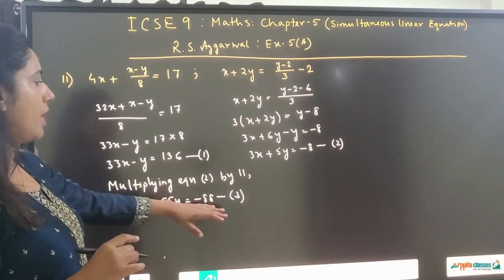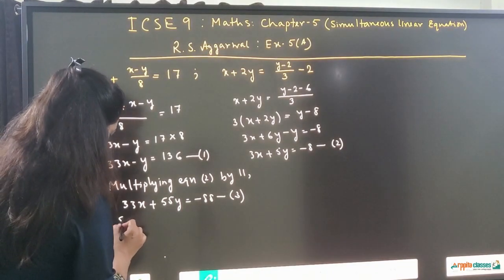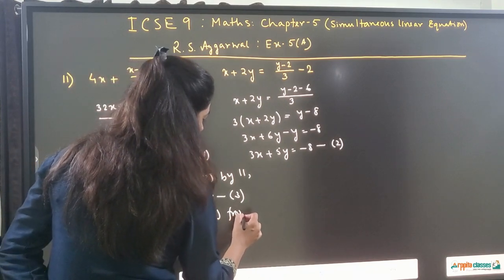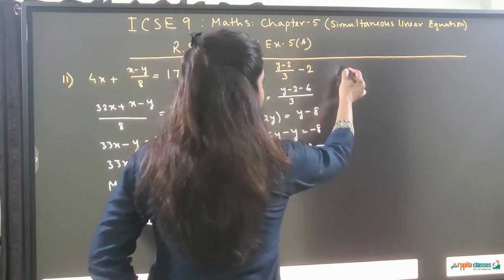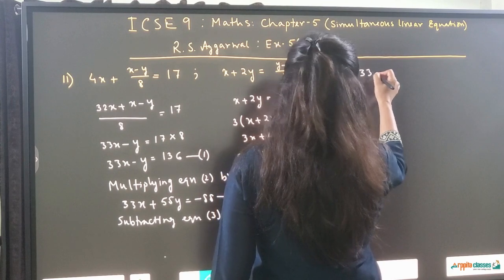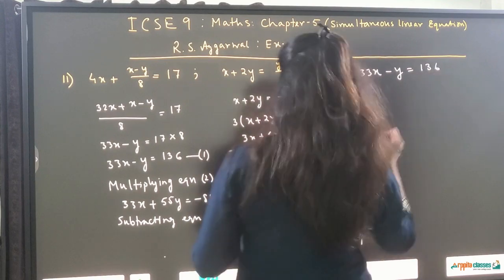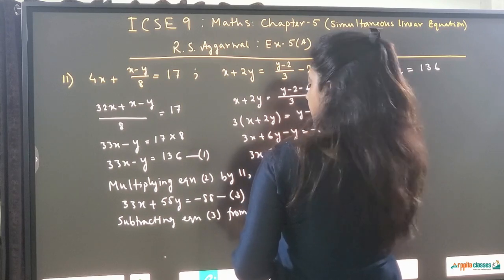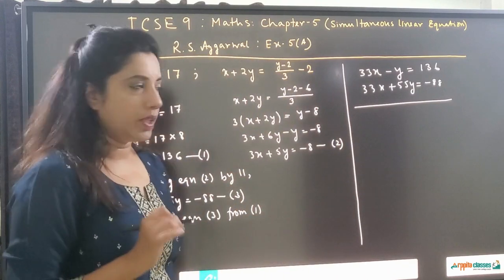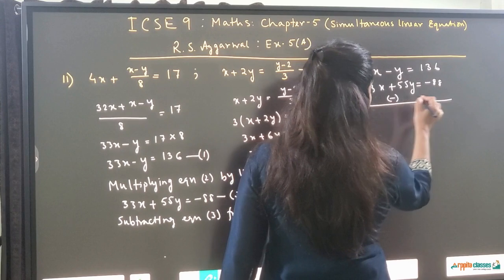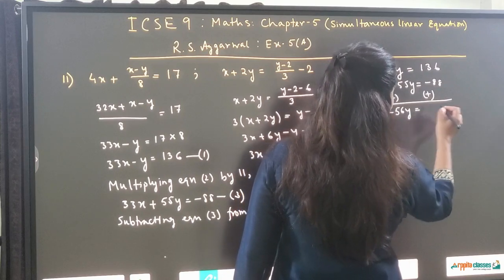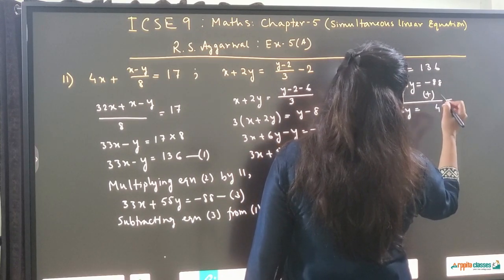Now subtracting equation 3 from equation 1. Writing equation 1 first: 33x minus y is equal to 136, and equation 3: 33x plus 55y is equal to minus 88. While subtracting we change all signs of equation 3: minus 33x, minus 55y, plus 88. The 33x terms cancel, giving minus y minus 55y equals minus 56y, and 136 plus 88 on the right.